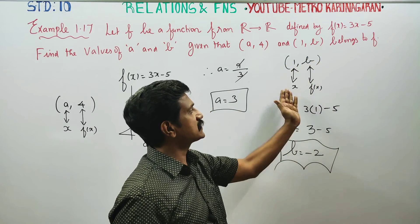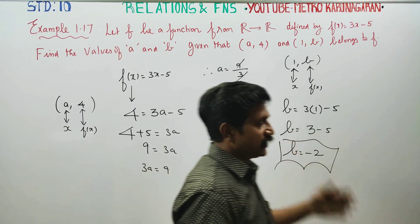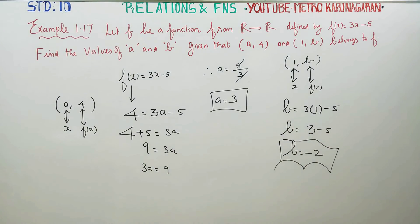The concept is x gives f(x). Therefore, the value of A is 3 and B is equal to minus 2. Thank you.